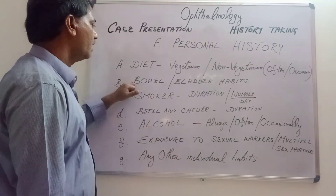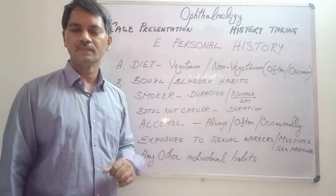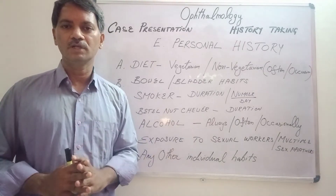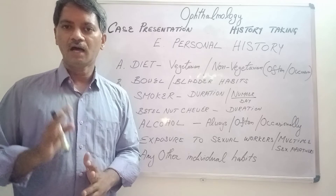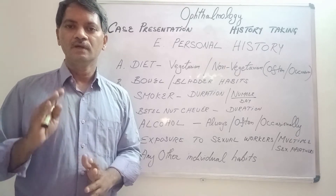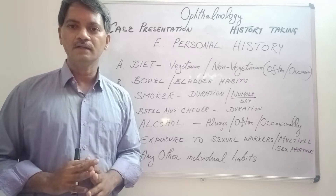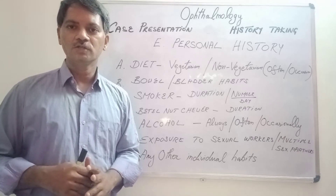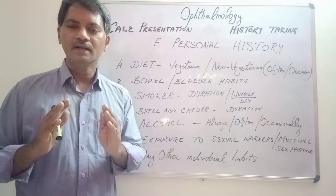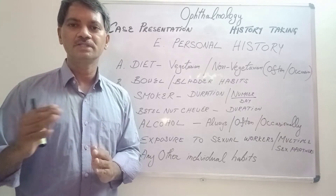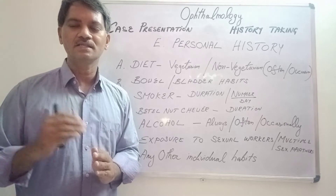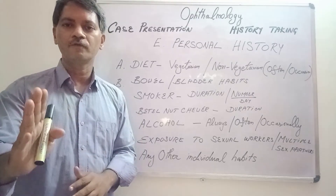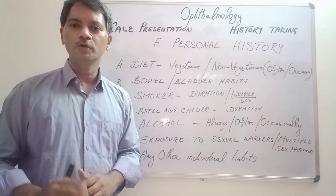Next is the bowel and bladder habits. How far it is going to be involved in ophthalmology is a big question, but I want to give an example. Females usually avoid going to the restroom when they go out of their houses, so they try to restrict this micturition urge and defecation urge when they go outside. Because of that, they are prone for multiple genitourinary problems.